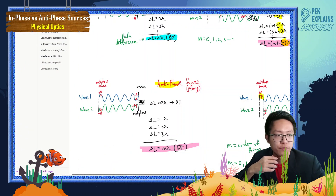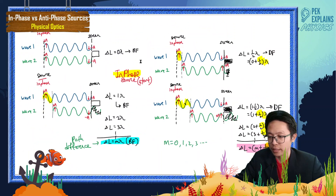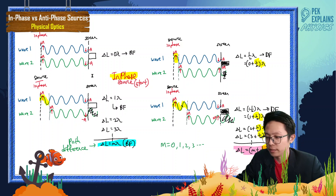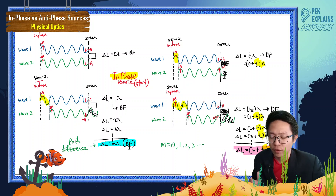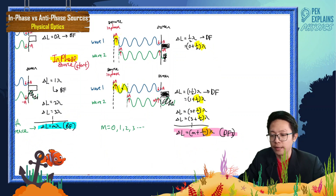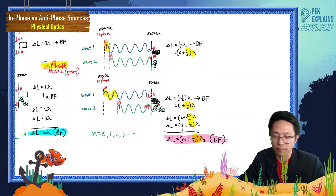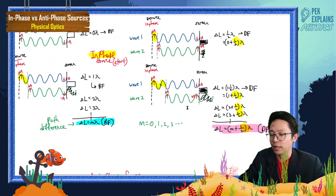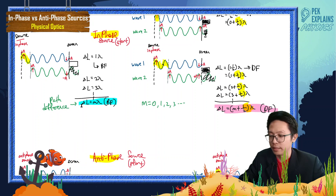As you have learned about path difference before, let us look again. For in-phase sources, we concluded that for a bright fringe, the path difference for both waves is either 0λ, 1λ, 2λ, or 3λ — generally M lambda. For a dark fringe, the path difference needs to be M plus half lambda.